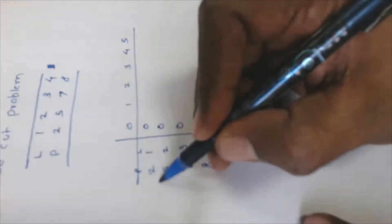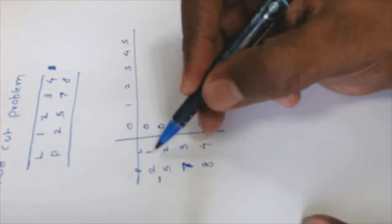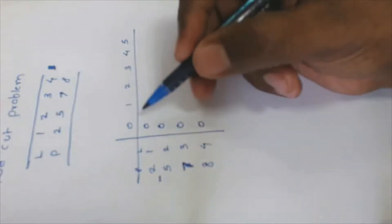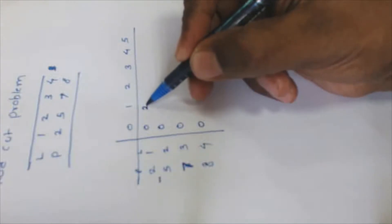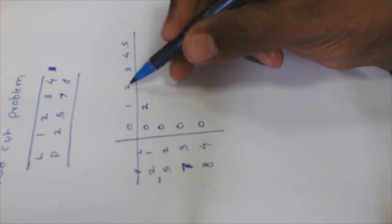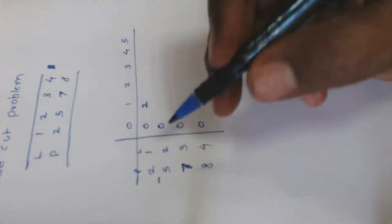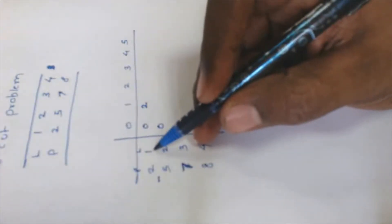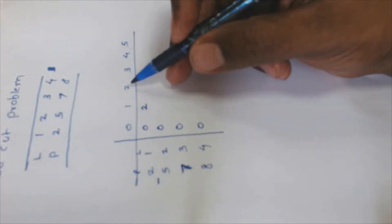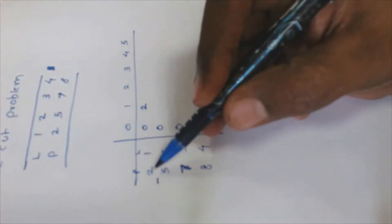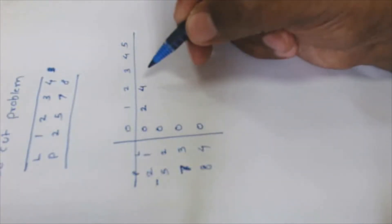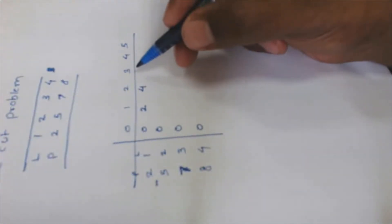If we have a rod of length one, the only possibility is to sell it for two, so the maximum price we achieve is two. If we have a rod of length two and the option to sell rods of length one only, the rod of length two is cut into two parts each of length one, giving us two times two — a maximum profit of four.